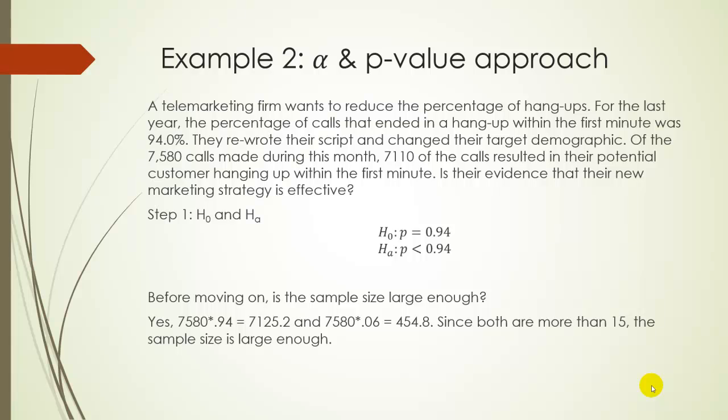So is there evidence that the new marketing strategy is effective? So we want to know if the strategy is effective, which means we want to know if it reduced the percentage of hang-ups. So we want P to be less than 0.94 if the strategy is going to be effective. And so H0, remember, always is an equal to sign, so it would be P equals 0.94. And again, be very careful here. Make sure that you're writing P equals, P not equals, P less than, whatever. But remember, these have to be P's over here because we're talking about making some conclusion about the proportion or percentage in a sample.